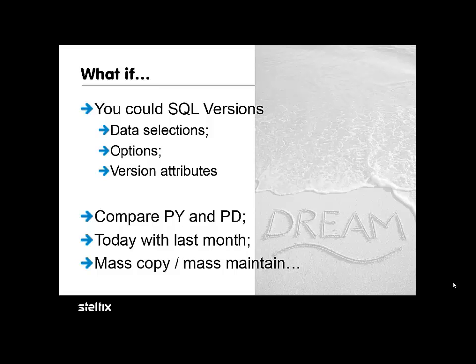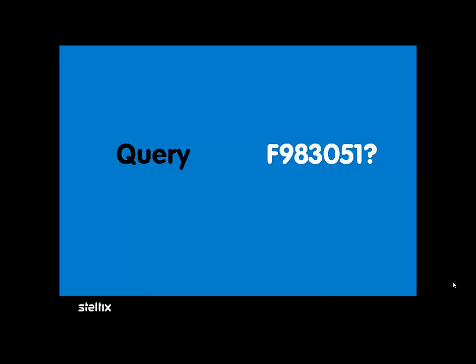Imagine the productivity gain and knowledge that your change is auditable, and the increased visibility. Tremendous potential. And the key to unlocking this potential is the F983051 table in JD Edwards. This is the version list, where all the version details are stored.